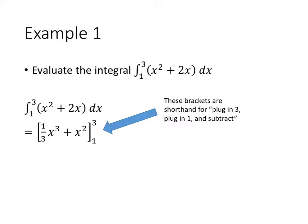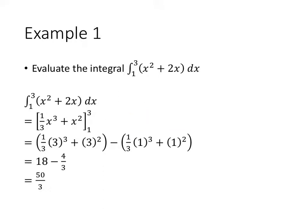Notice also we have these brackets here with the 1 and the 3. That's a little reminder to ourselves that the next step is going to be to plug in 3, plug in 1, and then subtract. So let's go ahead and do that. We've got our antiderivative here, we've plugged in 3, we've plugged in 1, and now we're subtracting. So when we plug in 3 we get 18, when we plug in 1 we get 4 thirds, and 18 minus 4 thirds works out to be 50 over 3.